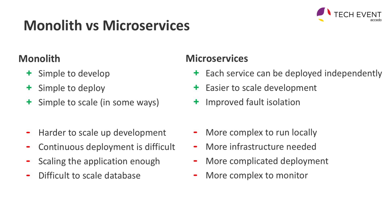But it's hard to scale development. If you're 30 people all committing to the same code base, you start blocking each other — waiting for pull request reviews, tests failing because someone else pushed something. Continuous deployment is difficult for the same reason: you need to test everything for even a minor change. Scaling the application can also be a problem if you have a single feature that's a performance bottleneck, because you need to scale the whole infrastructure.